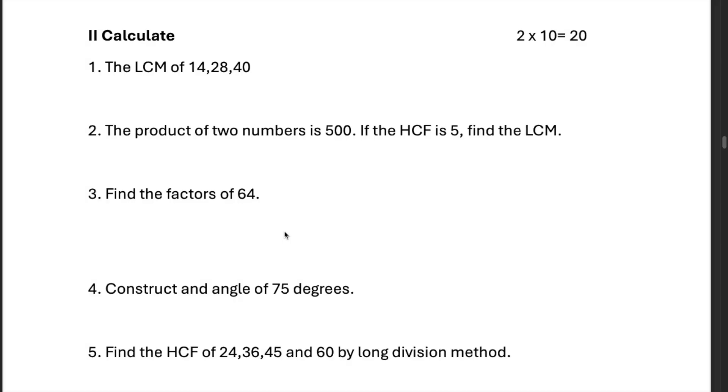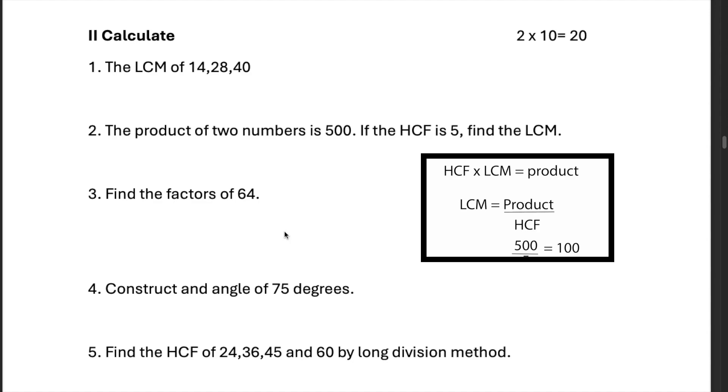The product of two numbers is 500. If the HCF is 5, find the LCM. Now we know that the product of the two numbers is the same as HCF into LCM. So you've got the HCF, you've got the product, so product divided by HCF will give you the LCM. So the answer is 100.